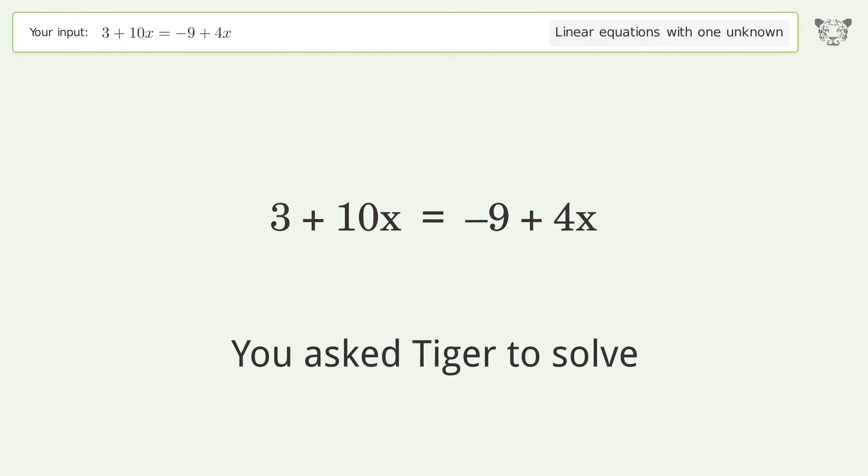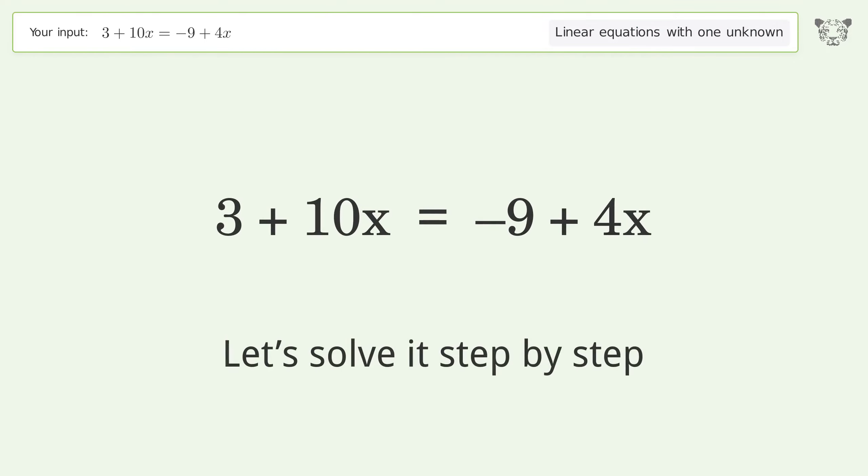You asked Tiger to solve. This deals with linear equations with one unknown. The final result is x equals negative 2. Let's solve it step by step.